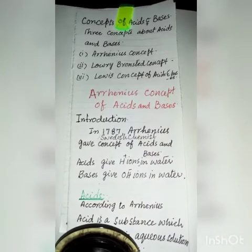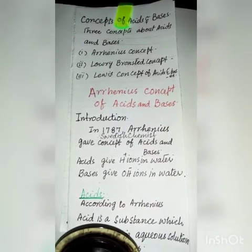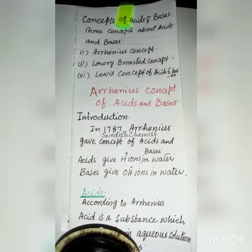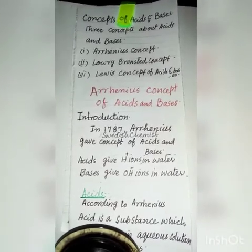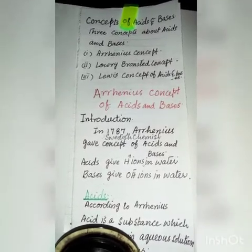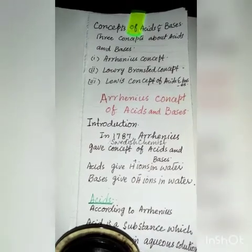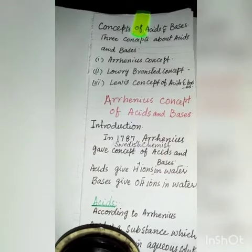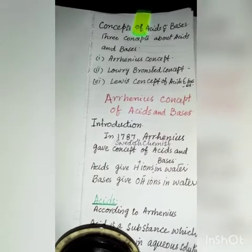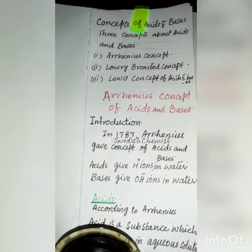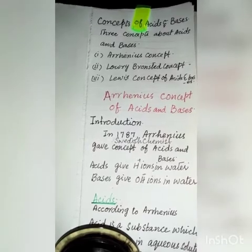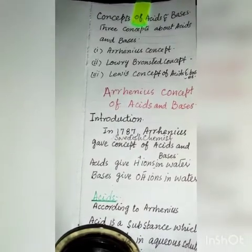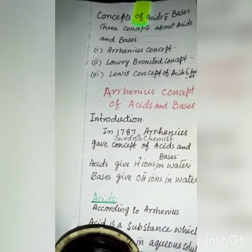In 1787, Arrhenius, a Swedish chemist, gave the concept of acids and bases. According to him, an acid is a substance which gives H+ ions in an aqueous solution, and a base is a substance which gives OH- ions in an aqueous solution or water. First of all, we will study how acids dissolve into water.